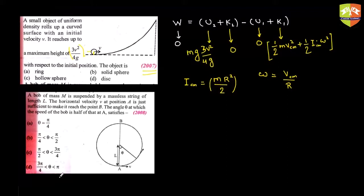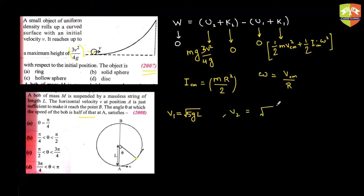What should the velocity be for the object to reach point B? We covered this in the work-energy chapter — it should equal √(5gL) for the object to complete the vertical circle. Now we are given a speed which is half of that. You need to find the angle θ at which the speed of the bob is half that at point A, i.e., where velocity becomes √(5gL)/2. Simply use the work-energy theorem: W = (U2 + K2) − (U1 + K1).